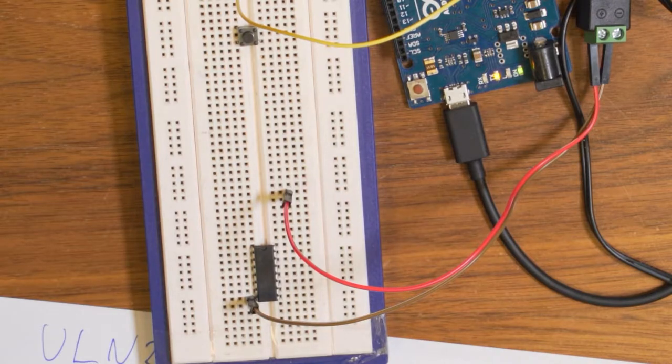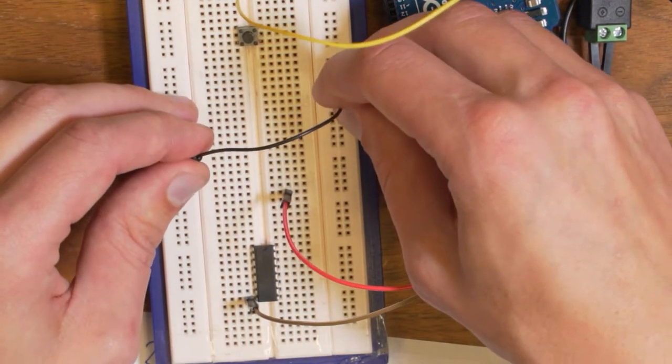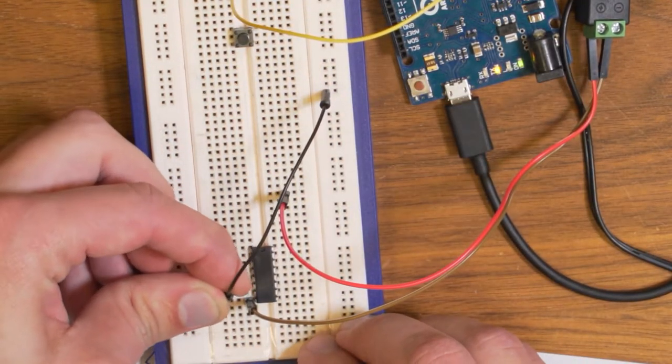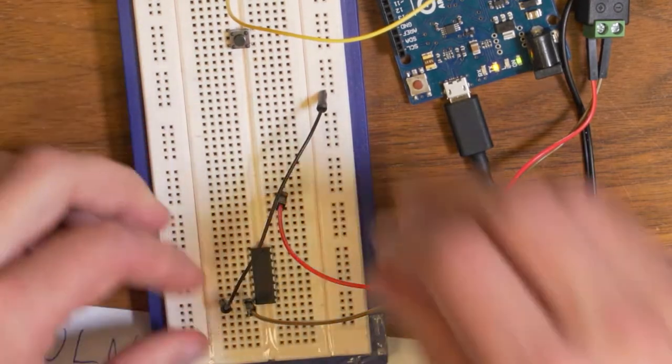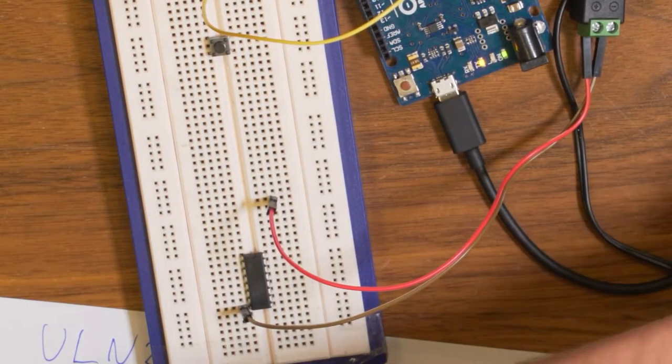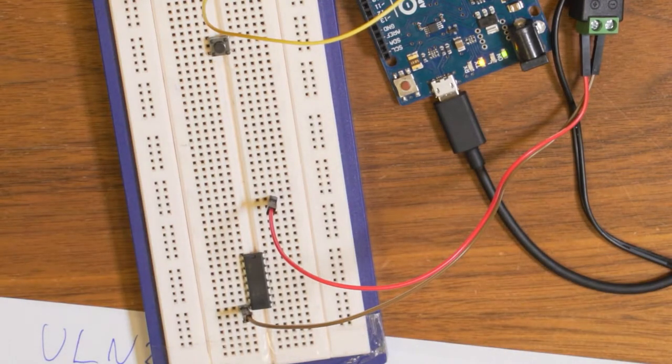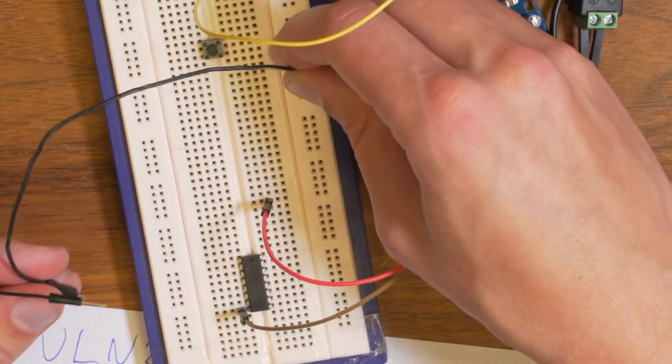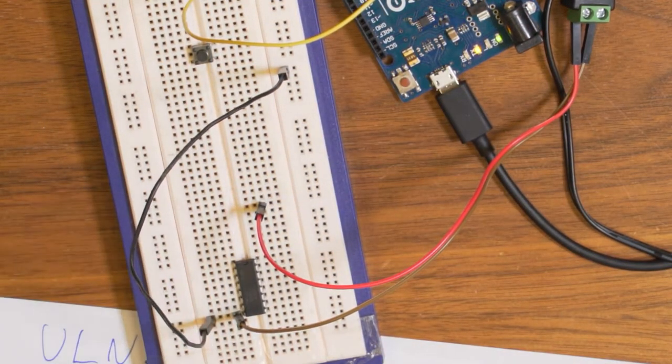So here I have the ground from the power supply. But also, like I said before, I need to connect the ground from the Arduino as well. Let me take a longer cable if I have one. Yeah, this is better.